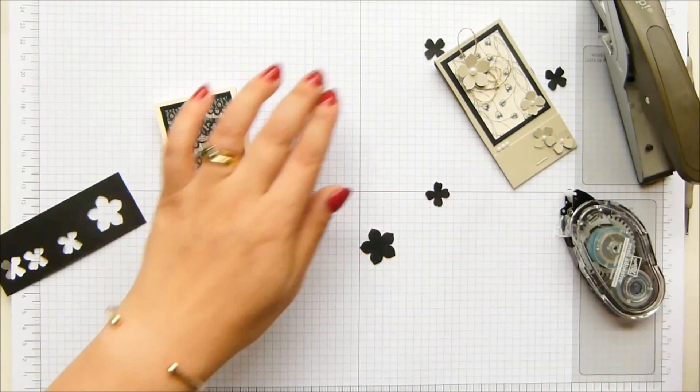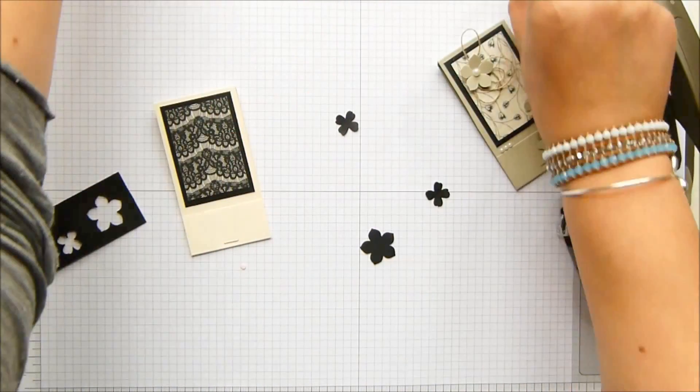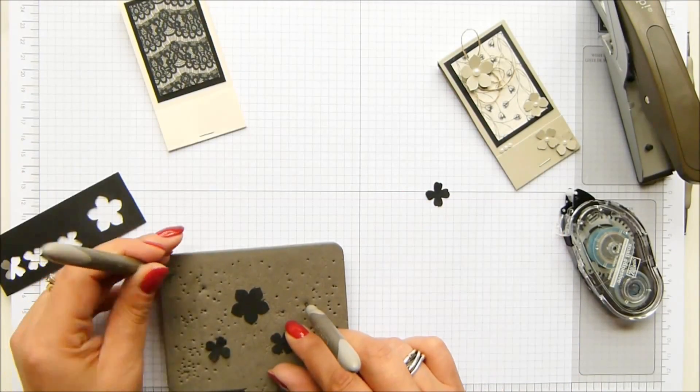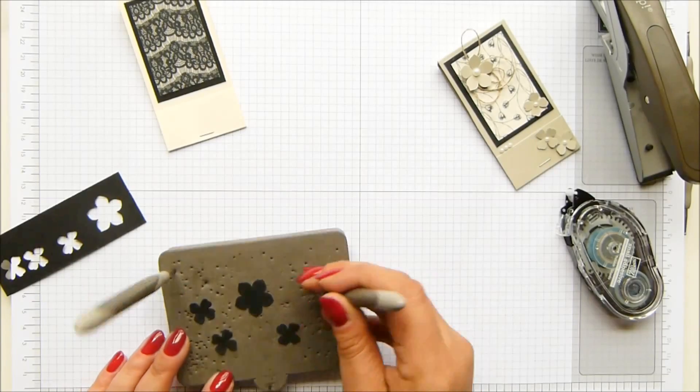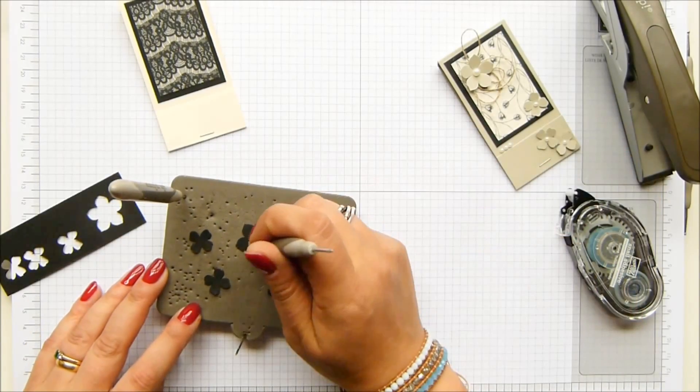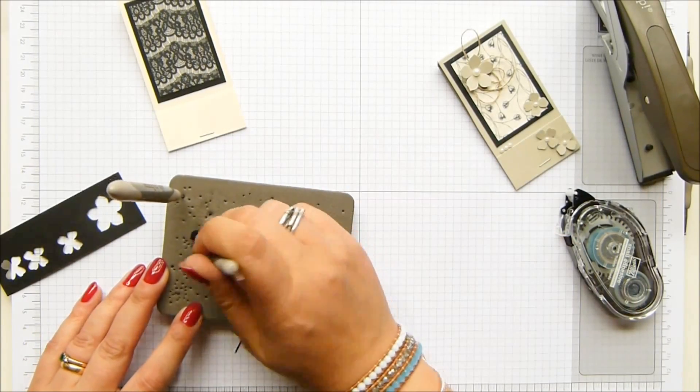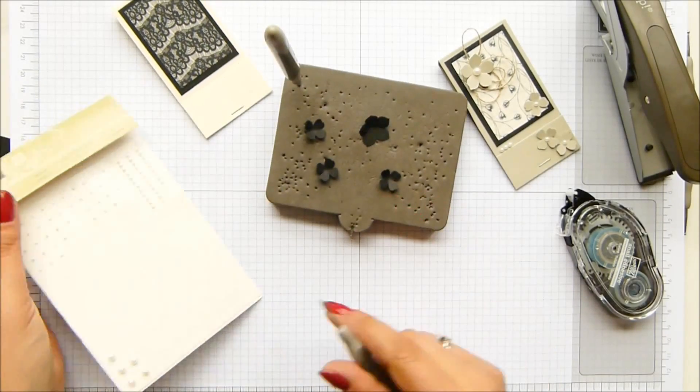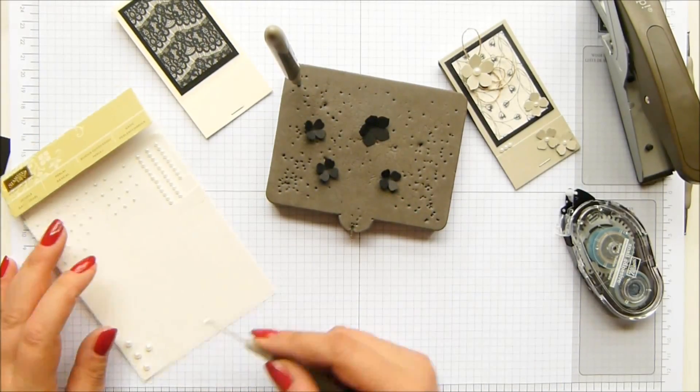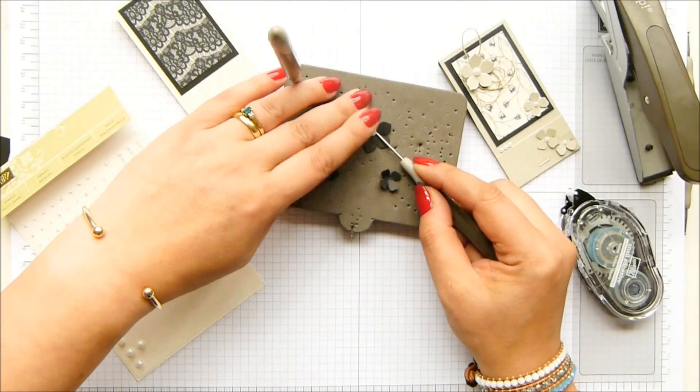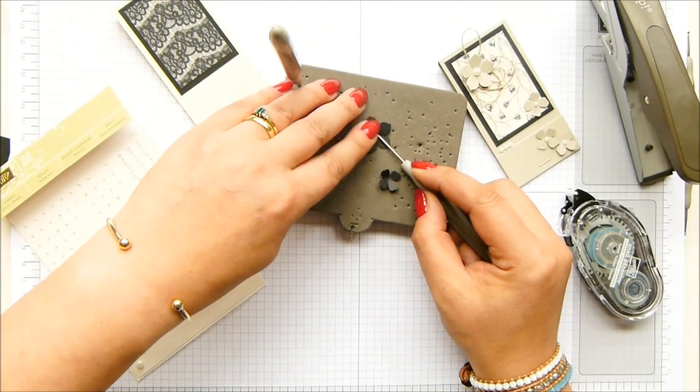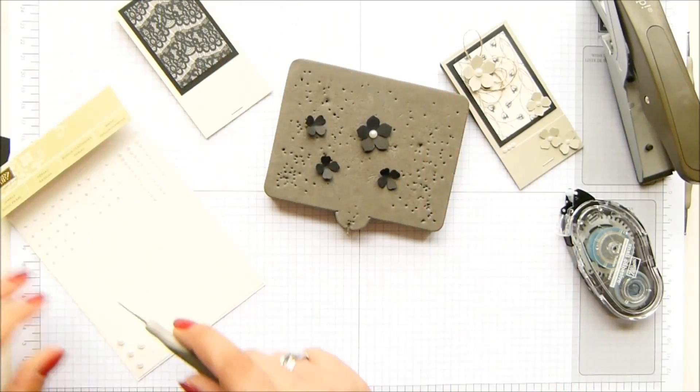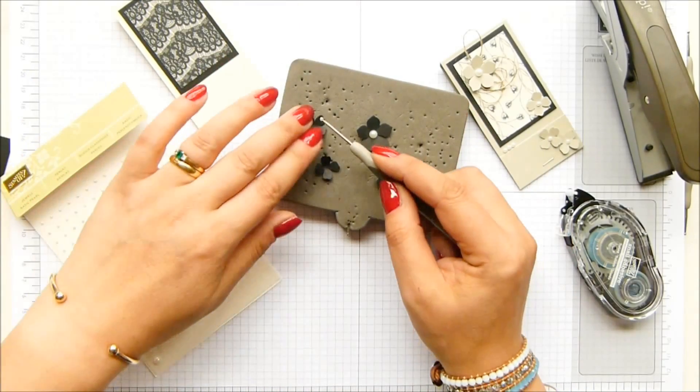And then finish these off. Oopsie daisy. I'm going to lift those up a little. So back of your paper piercer, into the middle. And I've got my basics pearls here. Love these things. Couldn't be without them, especially as they're pre-glued. Makes life so much easier. I've got glue on that one. And the little mini ones here just go in the center.